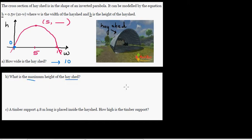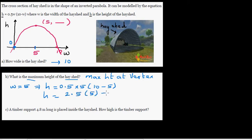What's the maximum height of the hayshed? Maximum height is at the vertex. As we know the vertex is halfway between the X intercepts, it is between 0 and 10, so that's 5. When W is equal to 5, H is 0.5 times 5 times 10 minus 5, which is 2.5 times 5, which is 12.5 units. So the coordinate is 5 comma 12.5.